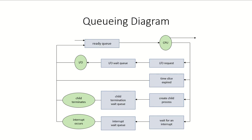Looking at the queuing diagram: from the ready queue, the scheduler selects one process and assigns it the CPU. Once the process has the CPU, either it finishes all its instructions and terminates, or it requires an input/output operation — in which case it goes for an I/O request and waits in an I/O wait queue for the device. When it gets the device and finishes using it, it goes back to the ready queue to wait again for the CPU to execute the next set of instructions.